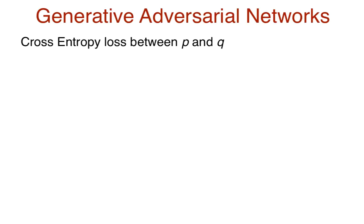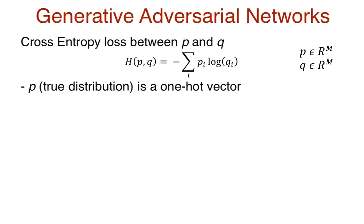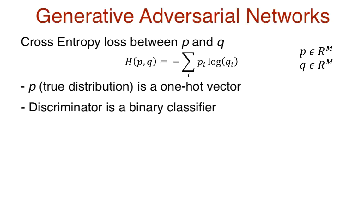The cross-entropy loss between the true distribution P and estimated distribution Q is given by this formula. P and Q are vectors of m dimensions, where m is the number of classes. A given sample can only belong to a single class, so the true distribution is a one-hot vector with one 1 and the rest zeros, because we are certain that the sample belongs to a specific class. The discriminator in a GAN is a binary classifier — it needs to classify data as either real or fake, so m is equal to 2, and the true distribution is a one-hot vector consisting of only two terms.